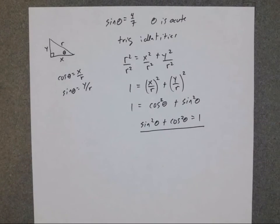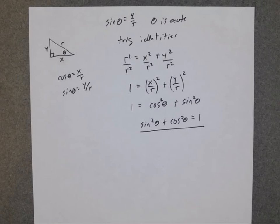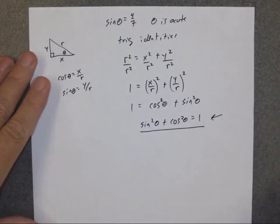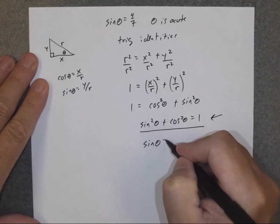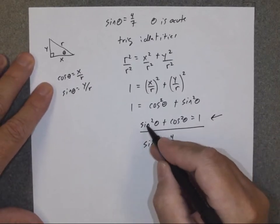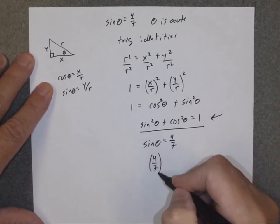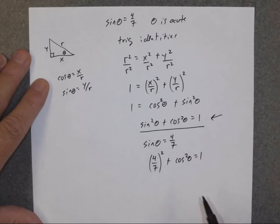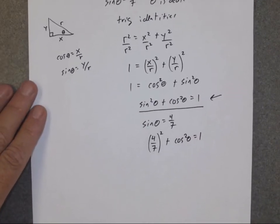The most common way to write this is: sine squared theta plus cosine squared theta equals 1. This is the most commonly used formula in all of trig — you will use it all the time, and it's very simple. There are two more formulas involving tangent and secant and cotangent and cosecant, but I won't derive those now; they're in your book. I just want to show you it's possible to solve our problem using this formula. We know sine of theta is 4 sevenths, so let's plug that in: 4 sevenths squared plus cosine squared of theta equals 1.